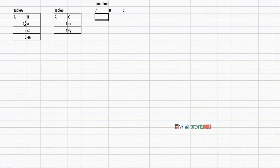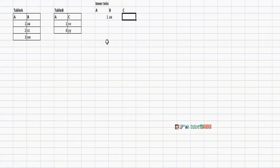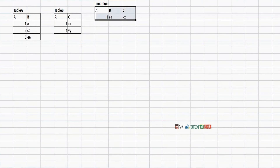Inner join means an equal condition. To establish a relationship between two tables, there must be a common column in Table A and Table B. For record 1 there is a matching condition, so it will be loaded. For records 2 and 3 there is no matching condition. This is the result set for inner join — only records with a matching condition will be loaded.